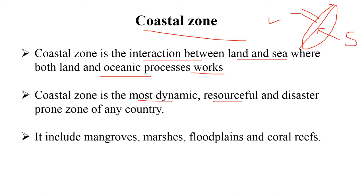Different nutrients are coming from the land to the sea, making this zone a much more productive ecosystem. Due to the increase in nutrients, the productivity of this coastal zone is increased — nutrient increase leads to increased productivity. Due to increased productivity, it increases the biological diversity of the coastal zone, and not only biological diversity but other natural resources are also very high here.